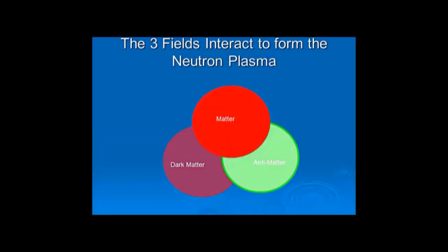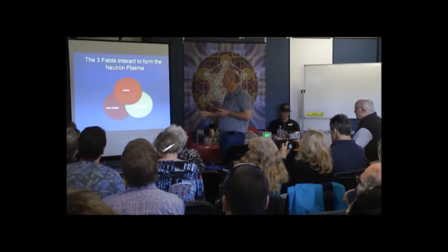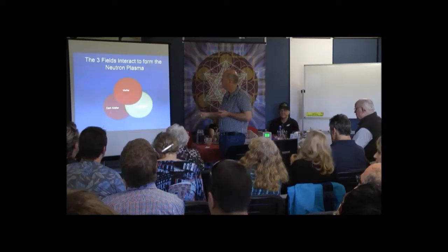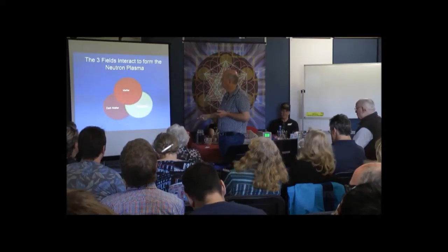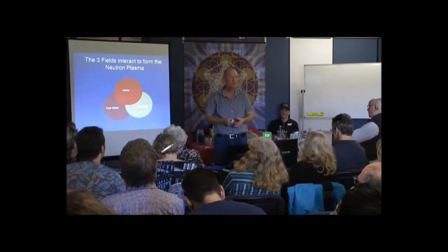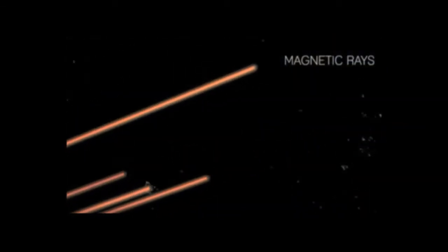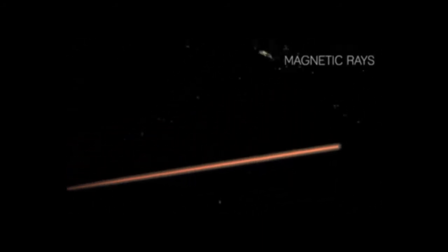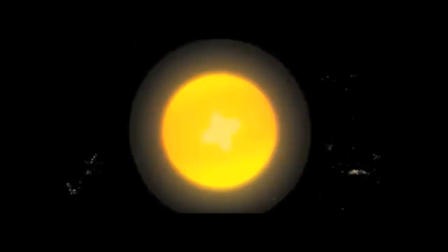Those three fields interact to form your neutron plasma. As shown earlier, you have those three fields interacting — this is how they are formed, how that plasma is created. So you've got your matter, your anti-matter, and your dark matter. These all interact and create their own magnetosphere, and there you have your plasma. It's gone from the original plasma from the sun into its rays, and then they form and collect — attracting each other at different field strengths — and those different field strengths come together, creating your neutron plasma.